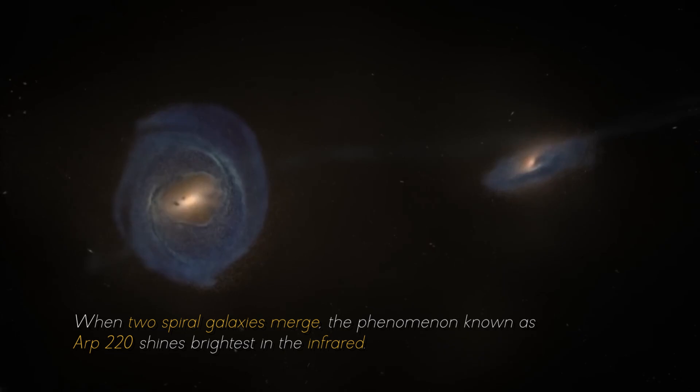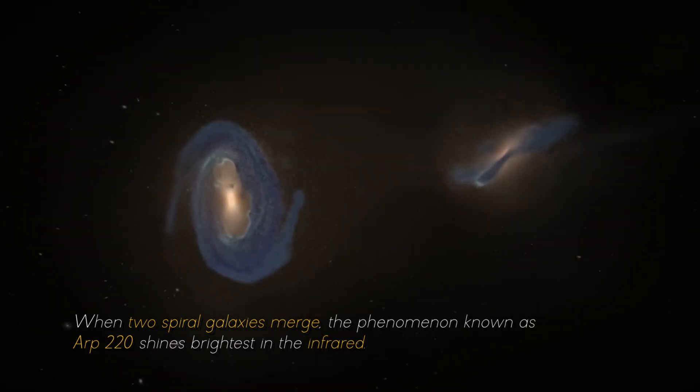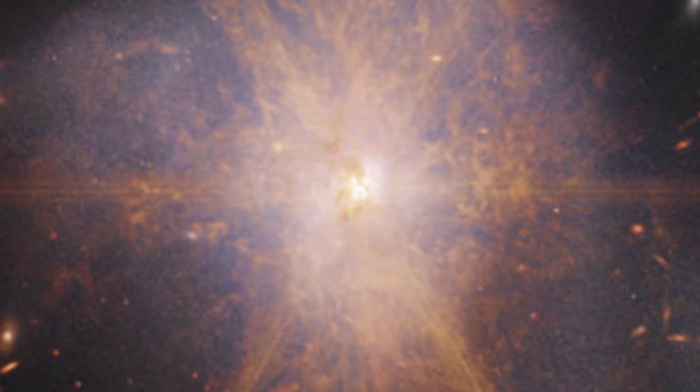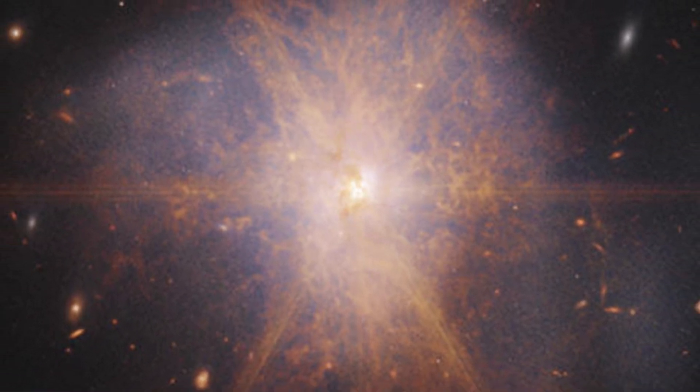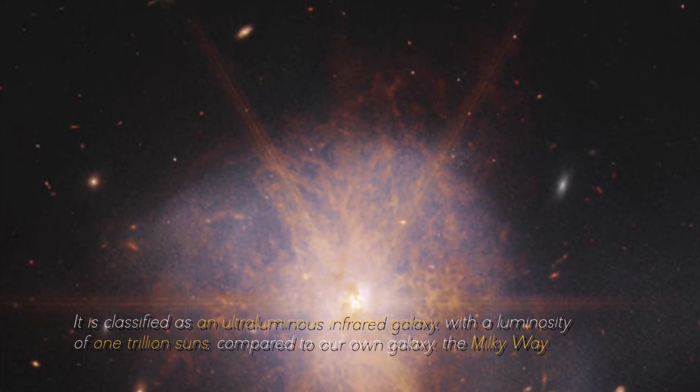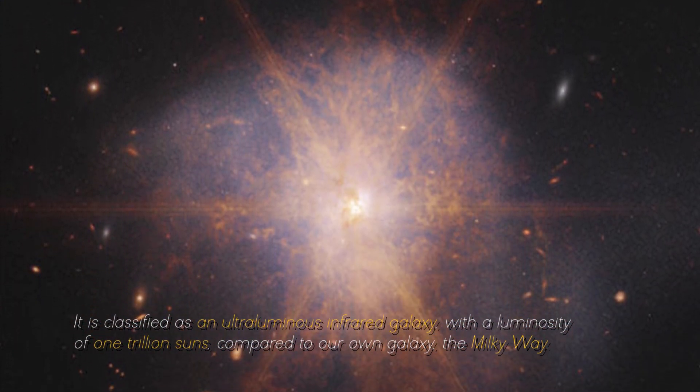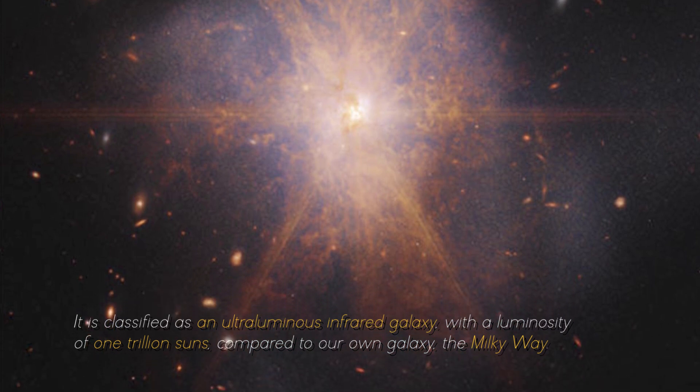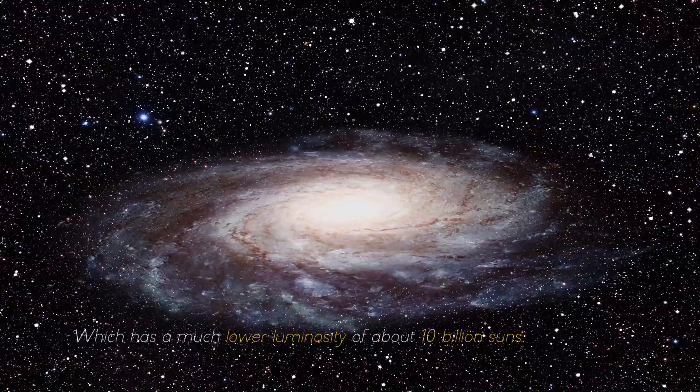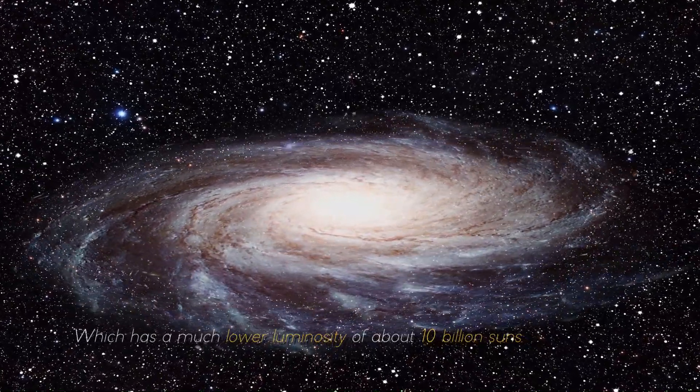When two spiral galaxies merge, the phenomenon known as ARP 220 shines the brightest in the infrared, making it perfect for observation by the James Webb Space Telescope. It is classified as an ultra-luminous infrared galaxy, with a luminosity of 1 trillion suns compared to our own galaxy, the Milky Way, which has a much lower luminosity of about 10 billion suns.